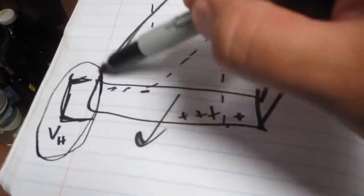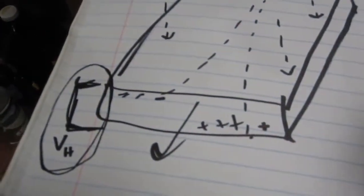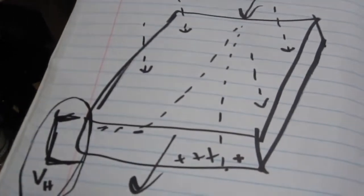I don't think it's really called the Hall voltage. But it's a smaller voltage, but it's a measurable voltage. And that measurable voltage is proportional to the strength of the magnetic field.